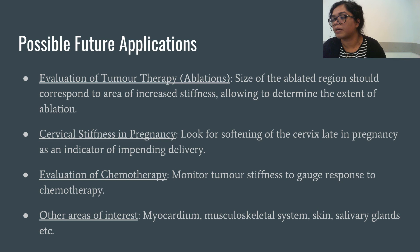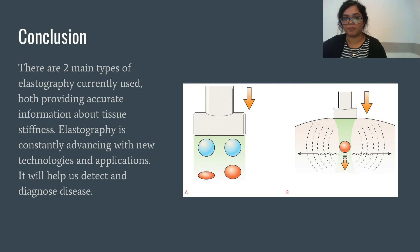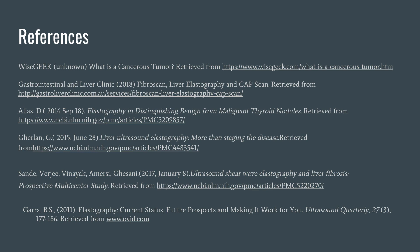In conclusion, there are two main types of elastography currently used, both providing accurate information about tissue stiffness. Elastography is constantly advancing with new technologies and applications, and it will help us detect undiagnosed disease. Thank you for your time. Hopefully you found it useful when it comes to understanding elastography. If you're curious about where we obtained our information, you can find our references section. And if you're watching these videos to prepare for an exam, good luck studying!